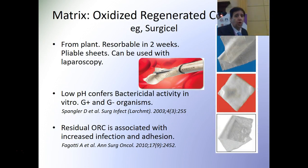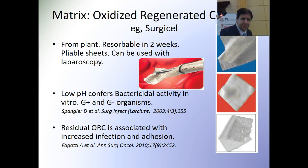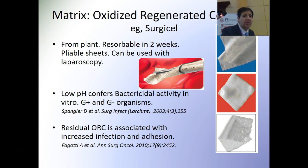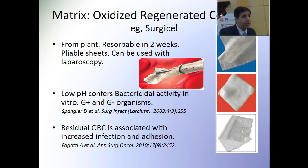First, I'll talk about oxidized regenerated cellulose — we're all familiar with this. This is the Surgicel group: we have Surgicel, Surgicel Snow, and Surgicel Fibro, all from the Surgicel company. It's from a plant, resorbable in two weeks, and comes in pliable sheets that can also be used with laparoscopy — cut into narrow lamelles that we can push inside during laparoscopic procedures.